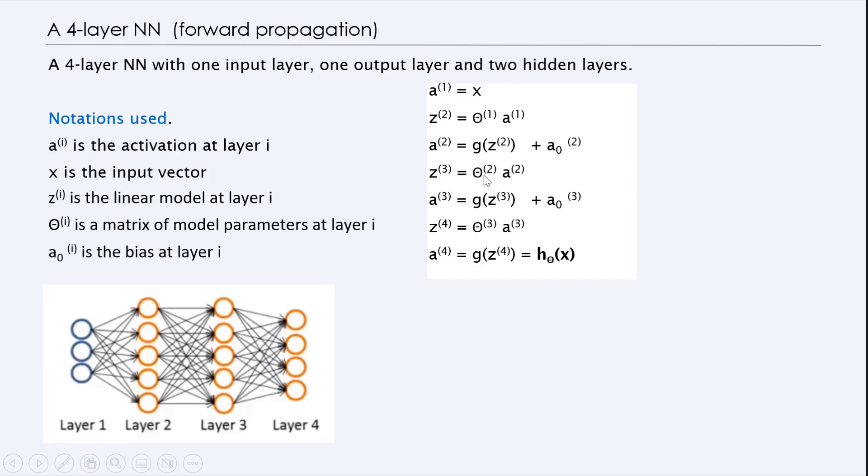And then you go through the same thing. You take the a^2, apply a linear transformation, the theta 2 are the weights here, the matrix of weights. You apply that, and then apply a nonlinear transformation and add the bias at layer 3, and then continue at layer 4, we get the hypothesis function. So the hypothesis function, if we train this correctly, will have the correct sum level of probabilistic outcome at this level.